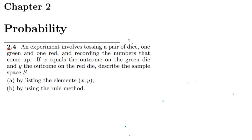We have a pair of dice or two dice, one green and one red, and recording the numbers that come up. The experiment is basically tossing a dice and we have to note the numbers which come up. If x equals the outcome on the green die and y the outcome on the red die, describe the sample space (a) by listing the elements (x,y) and (b) by using the rule method. So let me start solving it first by using the listing the elements method.